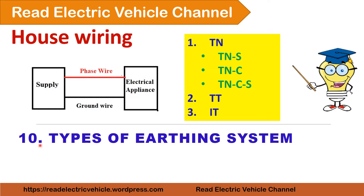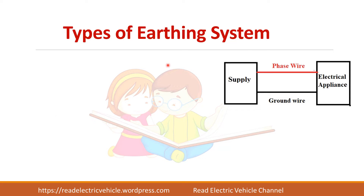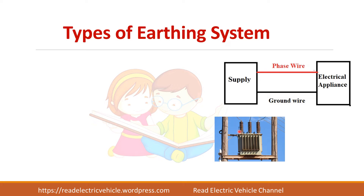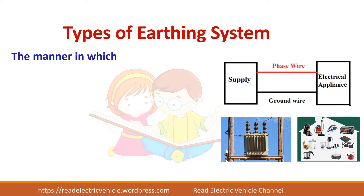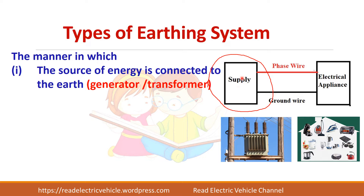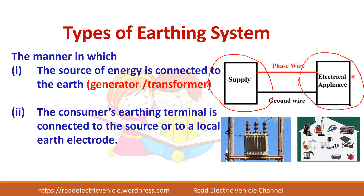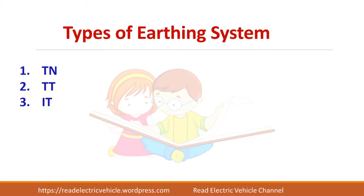In this video, let us see about the types of earthing systems. In a power system, there is a source supplying consumer equipment — a transformer or generator supplying electrical appliances. There are different types of earthing systems based on how the source is connected to the earth and how the electrical appliance is connected to the source or ground. There are three different types: TN, TT, and IT.